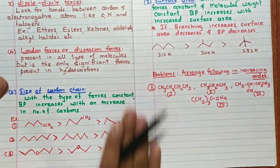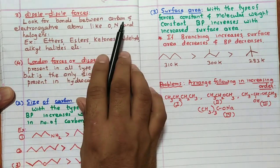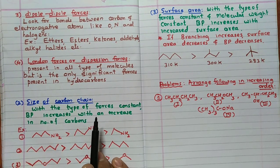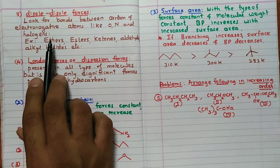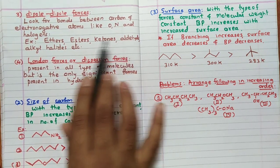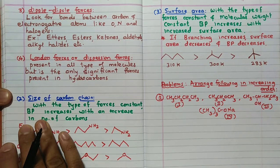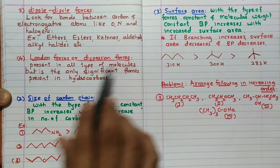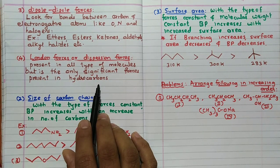For dipole-dipole interactions, look for bonds between carbon and electronegative atoms like oxygen, nitrogen, and halogens. Ethers, esters, ketones, aldehydes, and alkyl halides show dipole-dipole forces. London or dispersion forces are present in all molecules but are the only significant force in hydrocarbons.